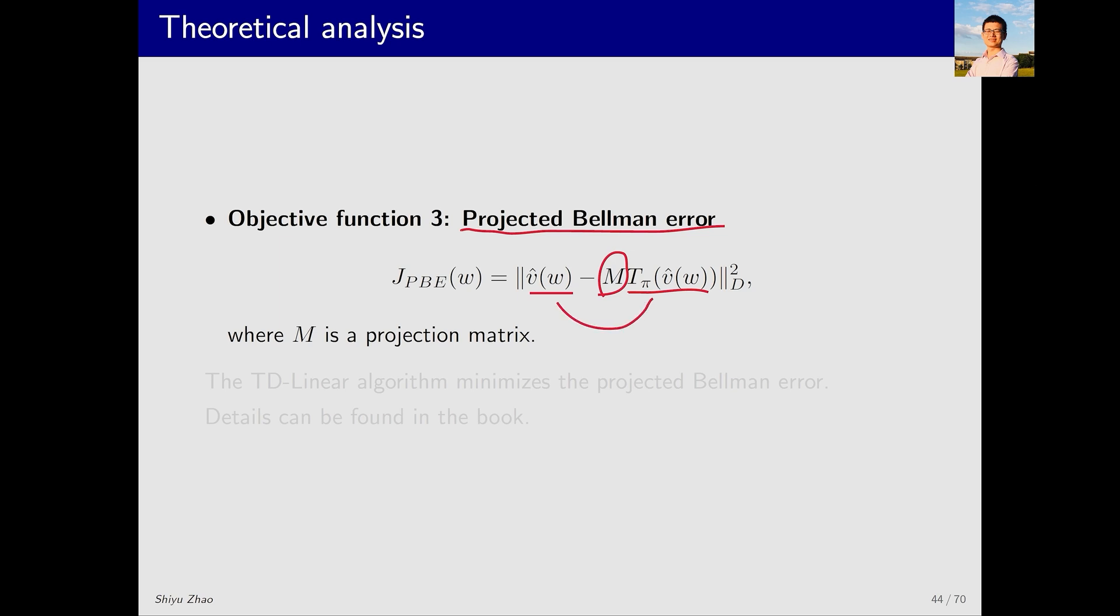It means that these two quantities might never be equal because the function you're using might not be able to perfectly approximate v pi. For example, if the function is a plane, as we discussed in the previous example, it can never perfectly approximate v pi no matter how we optimize its parameters. So we can multiply this quantity by a projection matrix. What space does it project onto? It projects onto the space consisting of all possible v hat. In this case, the error can be optimized to be zero. In summary, the TD linear algorithm we just discussed minimizes this projected Bellman error. I will not talk about more details about it in this lecture, because there are many. If you're interested, you can refer to my book for more theoretical analysis.